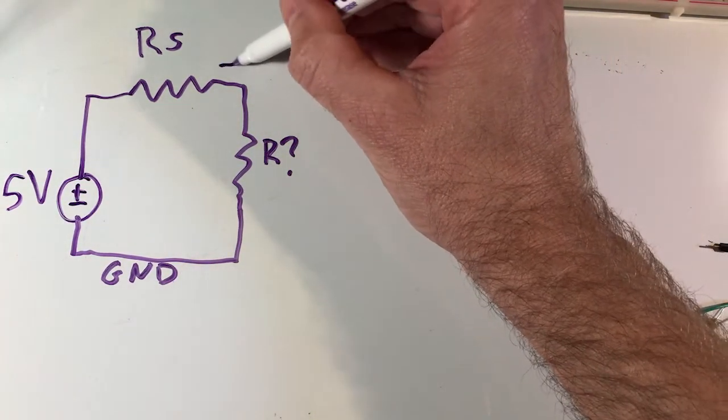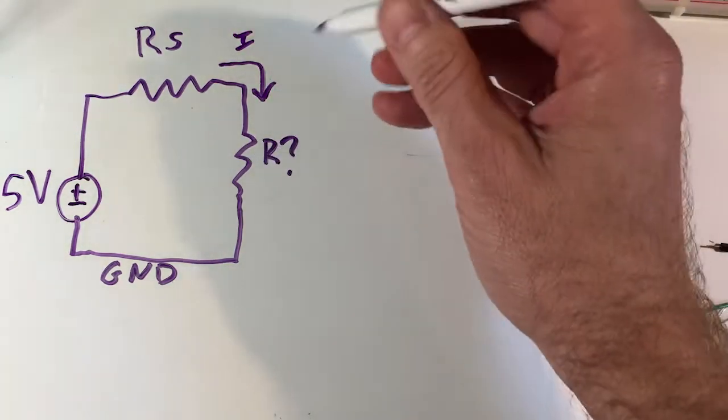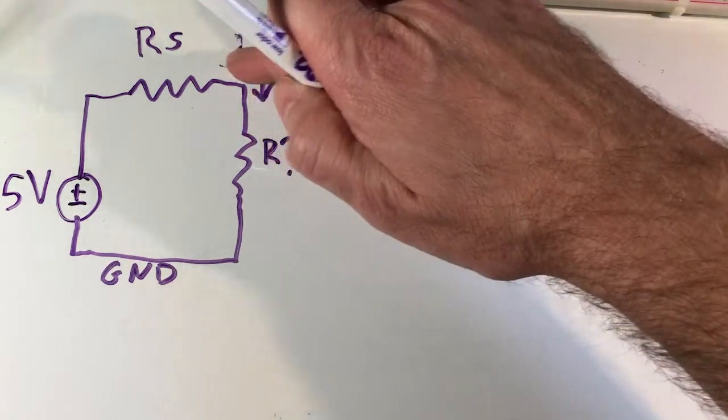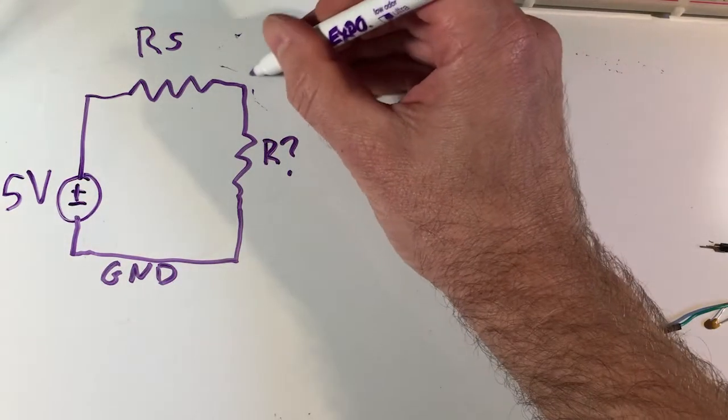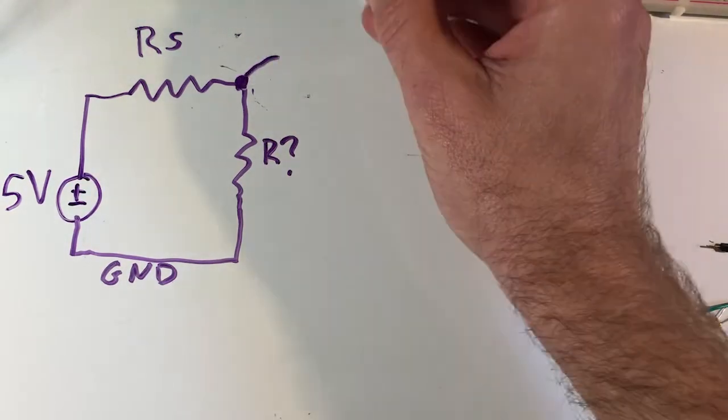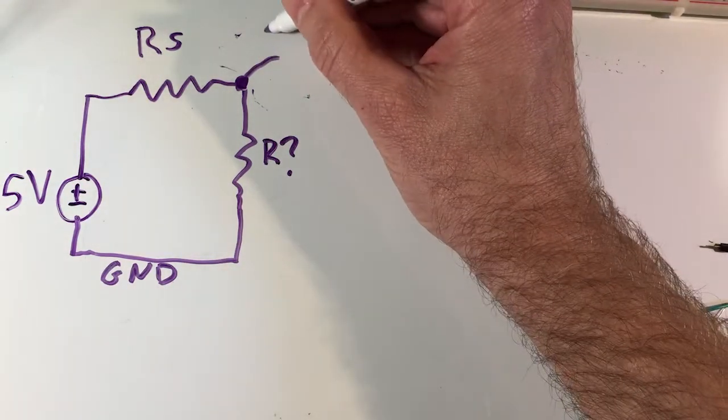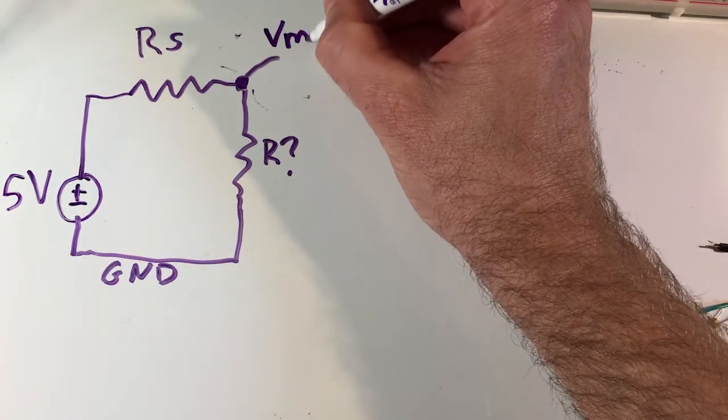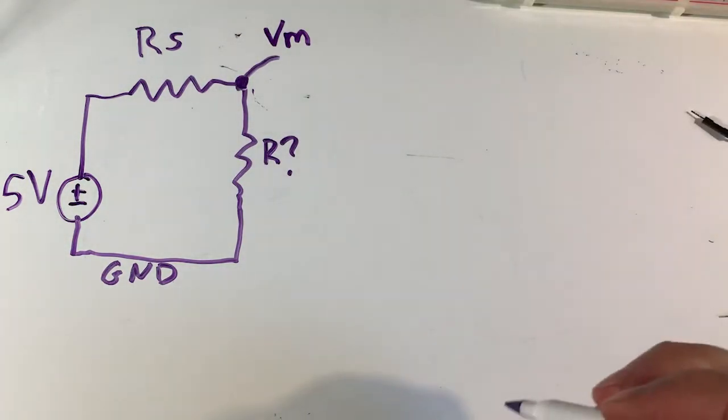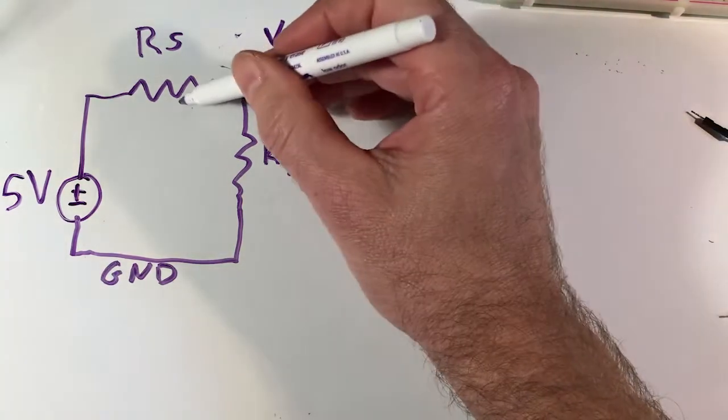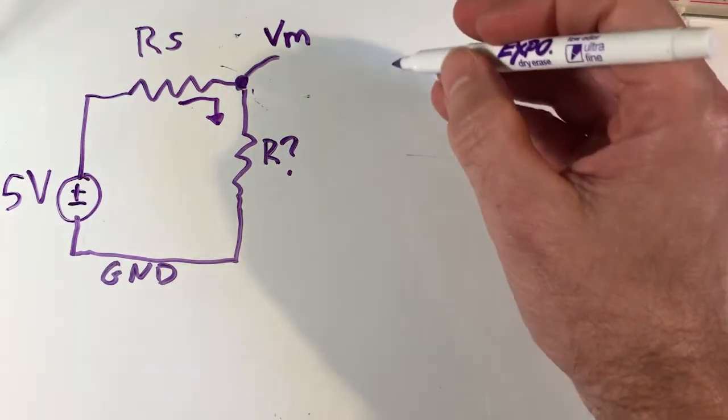This is a voltage divider circuit, so we can figure out the resistance question mark if we know one parameter in the circuit. It could either be the current flowing through the loop, then we can easily find that. Or if we don't know the current, which with our Arduino meters we don't really have the capability of measuring current easily, but we can measure the voltage at this node right here. We could attach our multimeter across the resistor and get a voltage measurement VM right there.